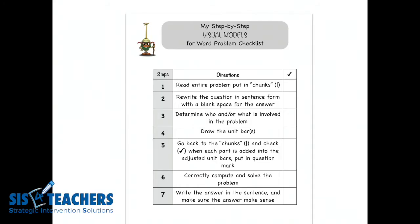We're going to look at what our step-by-step visual models say in our checklist when we're doing word problems. We want students to have a consistent way in grades first all the way up through fifth to look at problems. For first grade, we have seven steps.